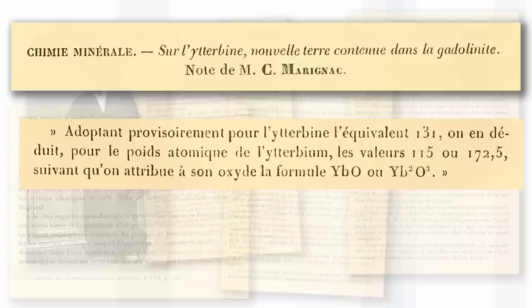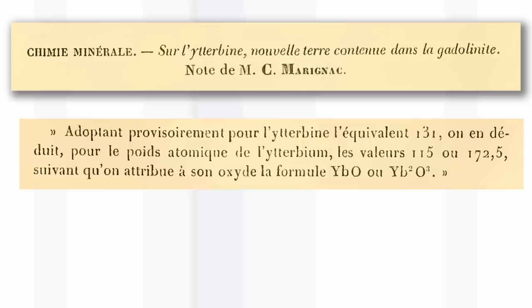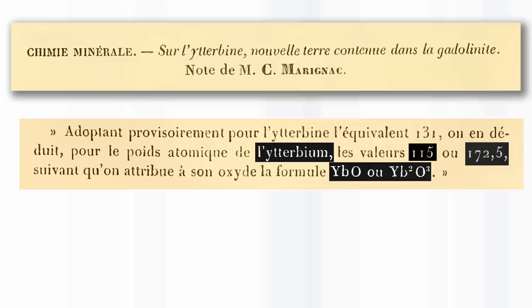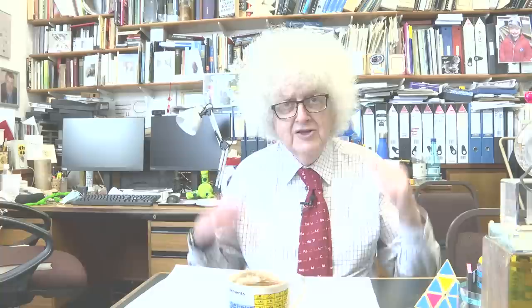This is a paper discovering a new element, and it's four pages long. He measured the atomic weight. He had just a tiny amount of this oxide and worked out that the atomic weight was either 115 or 172.5, depending on whether the formula was YbO or Yb2O3. It is Yb2O3, and his value of 172.5 is close to the modern value of 173, which I think is amazing.